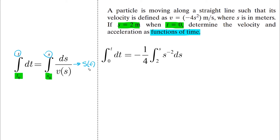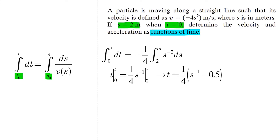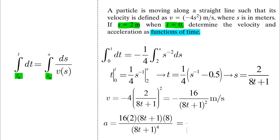Carrying out the integration, we take s to the power of 2 up with the negative power. The left side becomes t and the right side is s to the power of negative 1 over 4. Substituting the limits gives us t, and by isolating s we get s as a function of time. The rest is straightforward — just differentiate s twice to get v and a, and they are both functions of time by default.